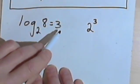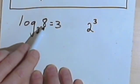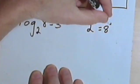Because remember, 3 is the exponent that I raise the base to in order to get that 8. So 2 to the third equals 8.